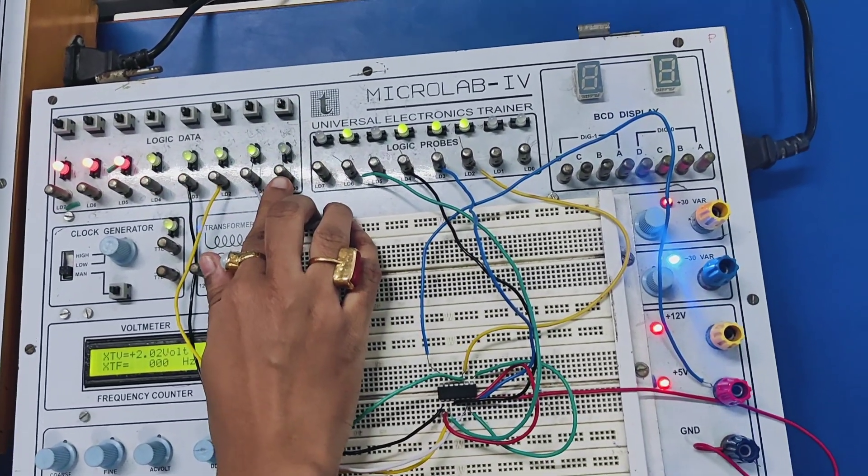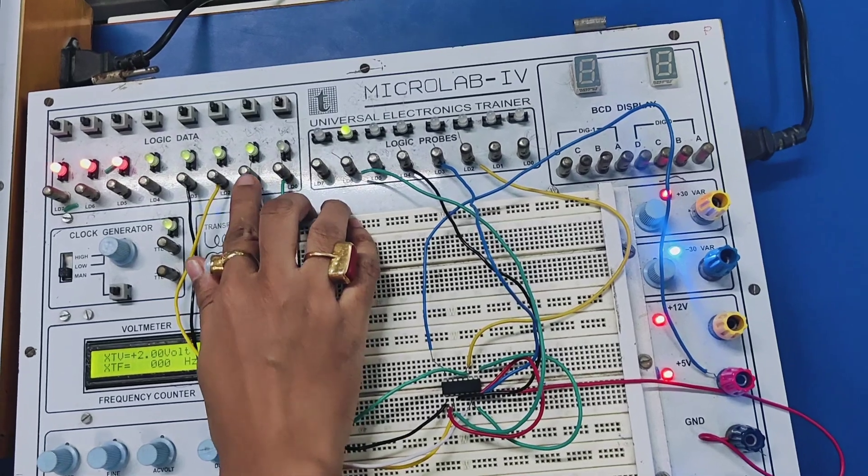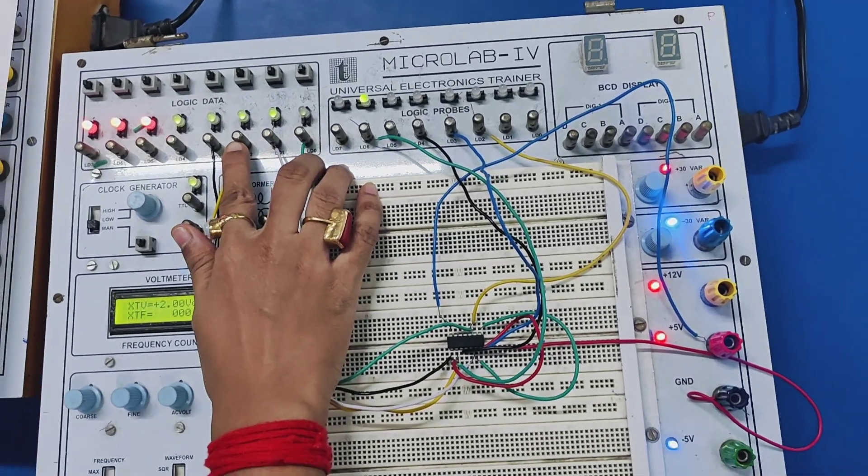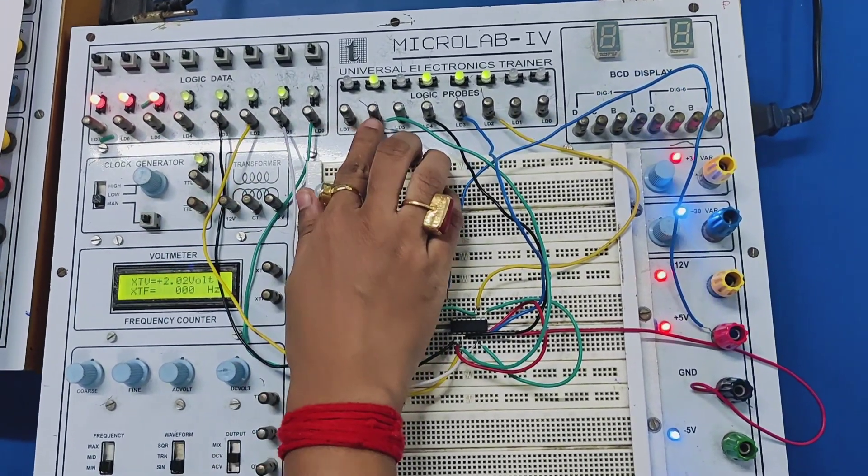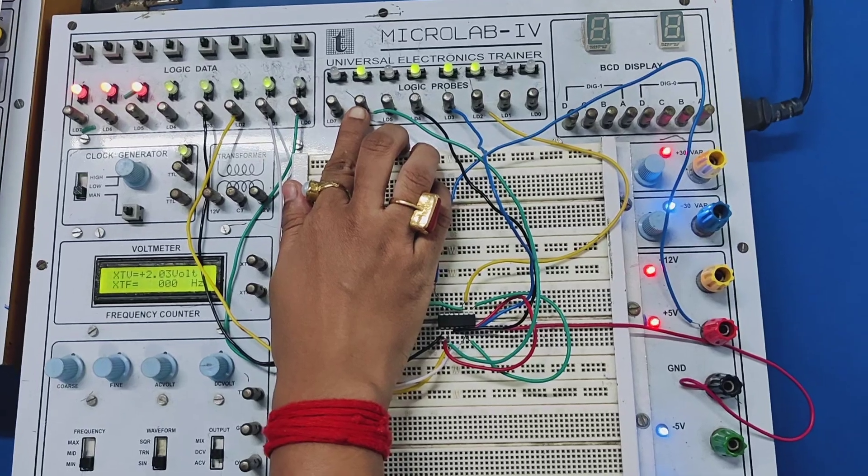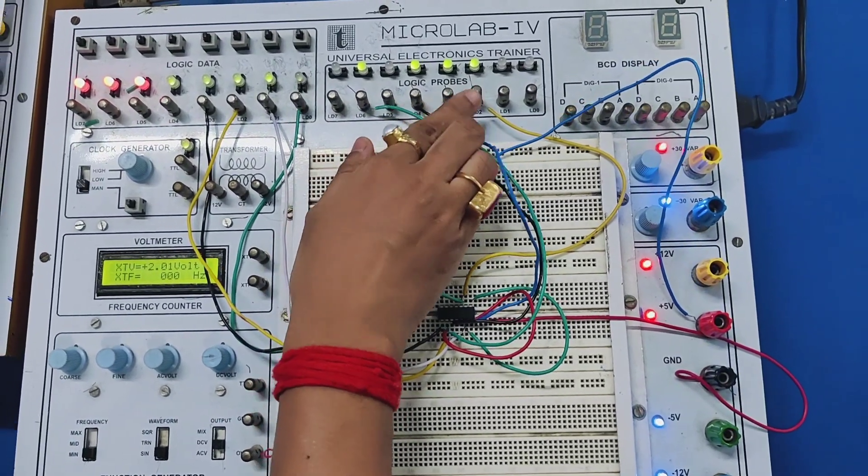Here this is b0, this is b1, this is b2, and this is b3. And the same way this is g3, g2, g1, and g0.